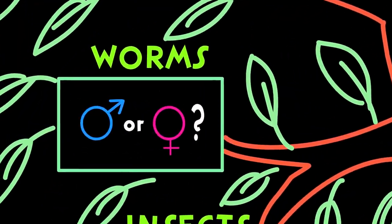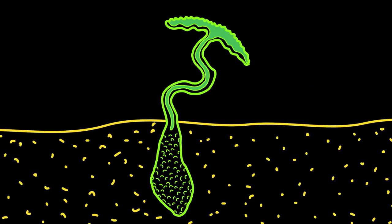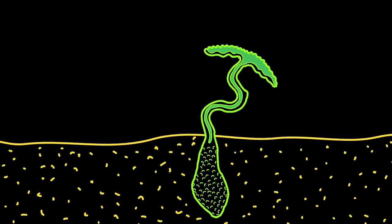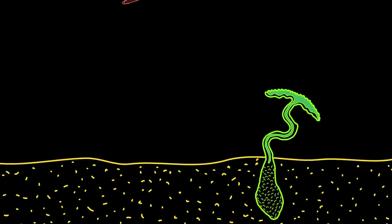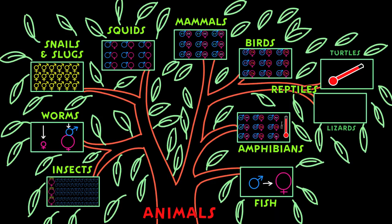In another very different ocean animal, the green spoon worm, the sex of the babies is determined by a completely different aspect of the environment. For this species, it is simply a matter of where a larva happens to randomly fall on the sea floor. If a larva lands on the open sea floor, then it will become a female, but if it lands on top of a female, then it will become a male.